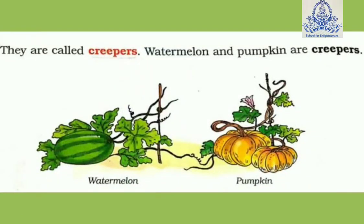Some plants with weak stems grow along the ground. Such plants are called creepers. For example, watermelon and pumpkin are creepers.